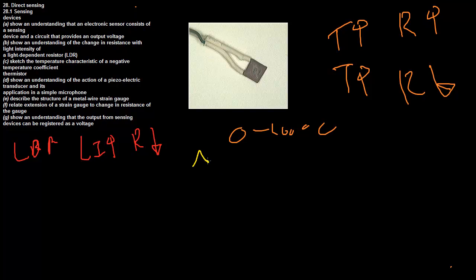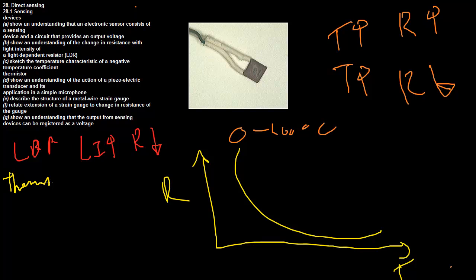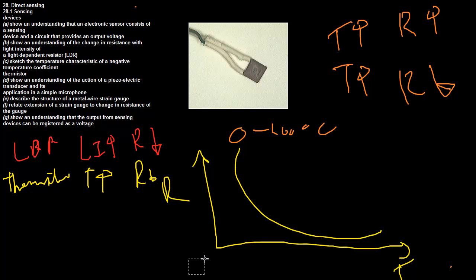And again this is a non-linear relationship. It looks something like this, resistance here and temperature here, and it's a curve like that. So again you need to calibrate this. So the next one we have is a thermistor, and in this one as the temperature increases resistance decreases. It's the same trend as the LDR, the light dependent resistor.